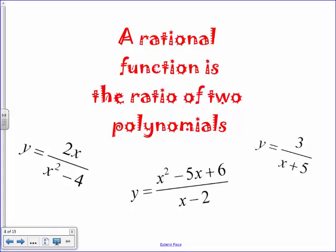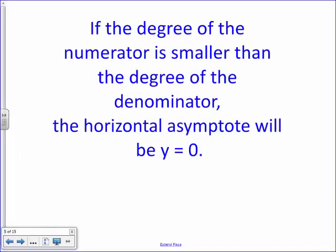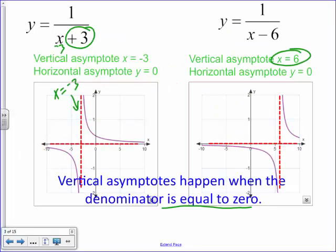We're going to look at all kinds of rational functions — some are more complex, so we need to be good at factoring, and we'll bring in long division to help find asymptotes. One important rule: if the degree of the numerator is smaller than the degree of the denominator, the horizontal asymptote is always y equals zero. Looking at degrees, we pay attention to variables and their exponents. A constant has degree zero; an x to the first power is a first-degree polynomial.